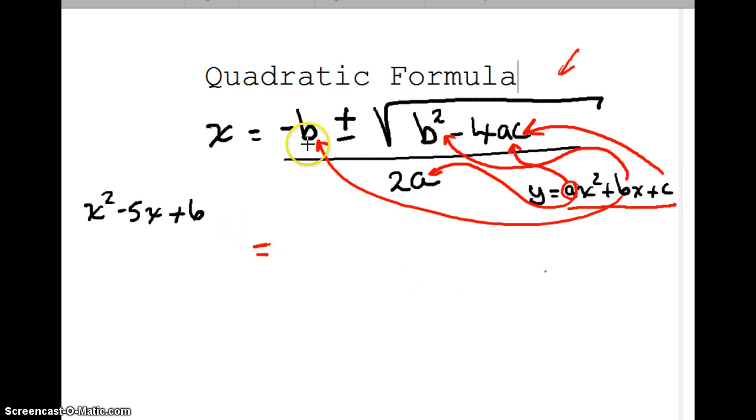Here we have negative b. So, my b is negative 5. So negative negative 5 means that I have positive 5 plus or minus the square root of b squared. b is negative 5. And that number here, b squared, is always going to be a positive number, whether or not this is positive or negative. When we square it, we're going to end up with a positive. Minus 4. a, in this case, is a 1. c, in this case, is a 6.